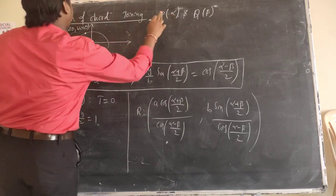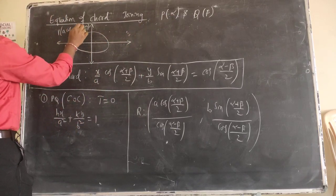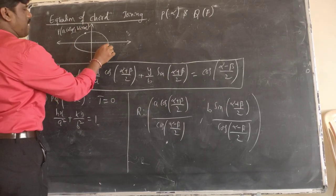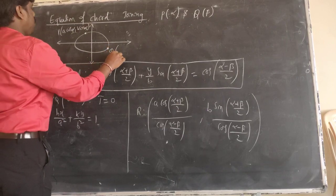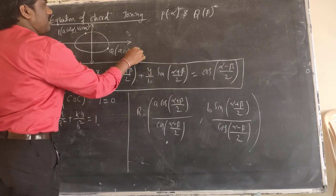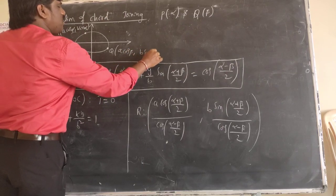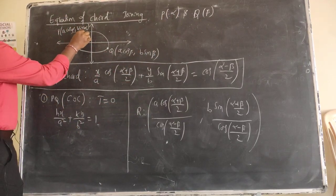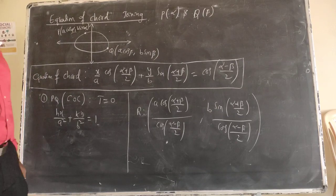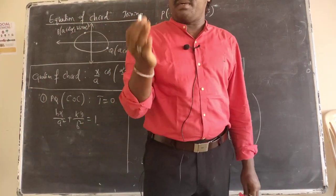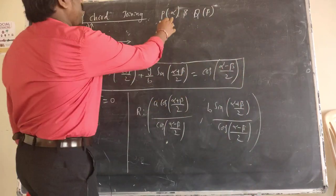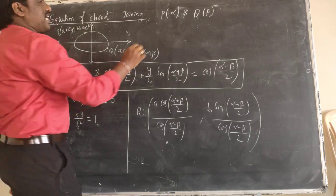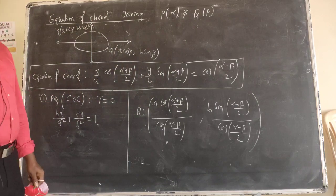If α is given, then P(α) means the parametric point a·cos(α), b·sin(α) on the ellipse. Similarly, Q(β) means a·cos(β), b·sin(β). So P(α) is the parametric point on the ellipse where the angle is α, giving a·cos(α), b·sin(α), and Q(β) gives a·cos(β), b·sin(β).